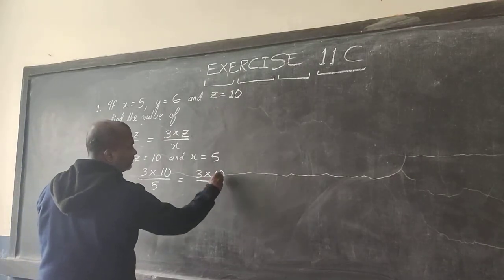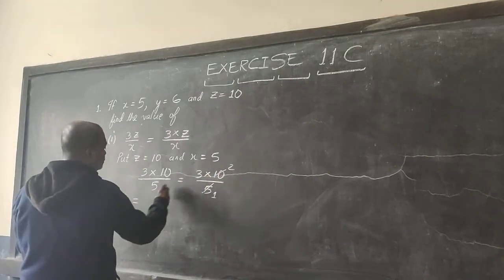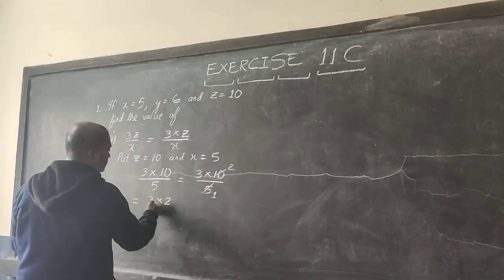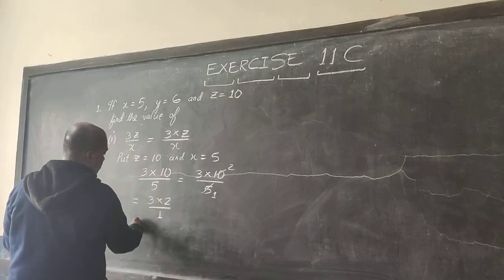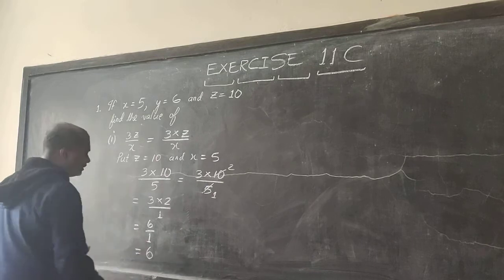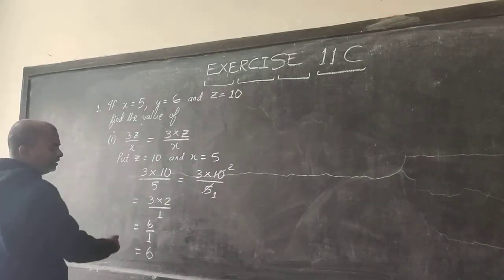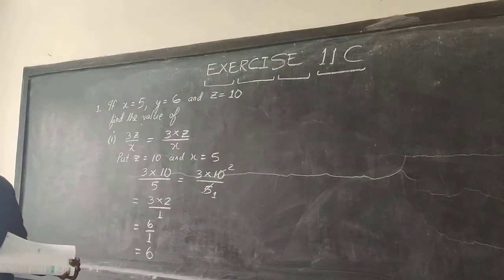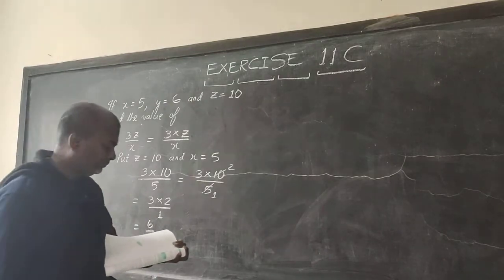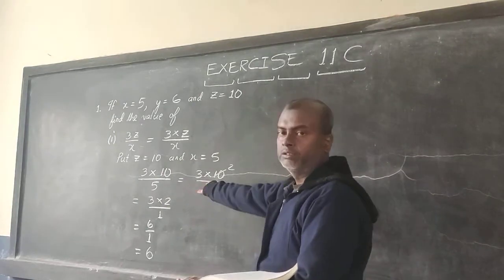5 into 10. So you will have 3 into 2 divided by 1. That is 6 divided by 1 which is equal to 6 only. So the answer of this particular expression is 6. I think we have understood this. It is as simple as it is.